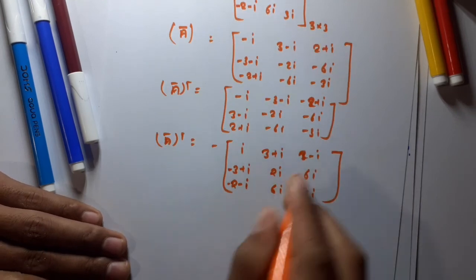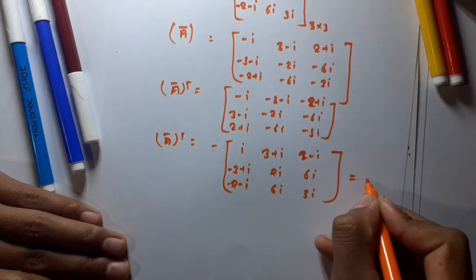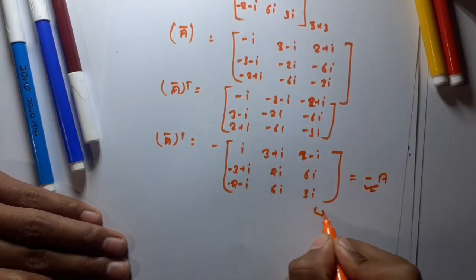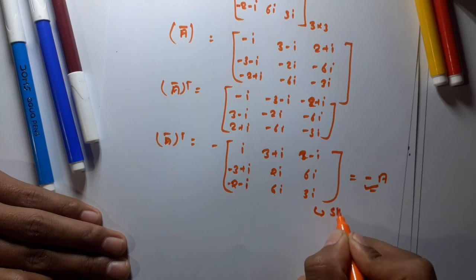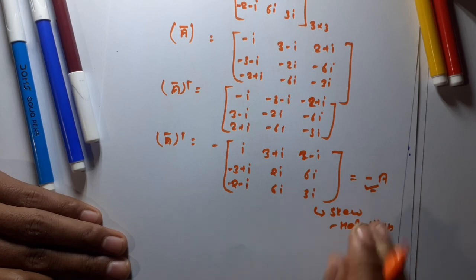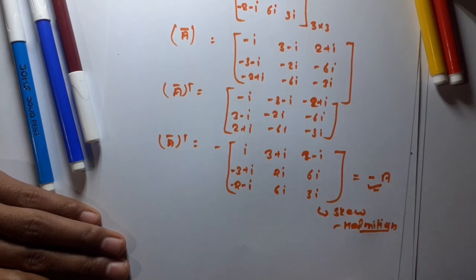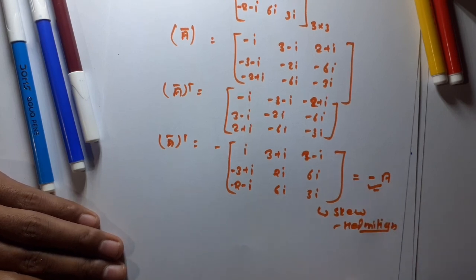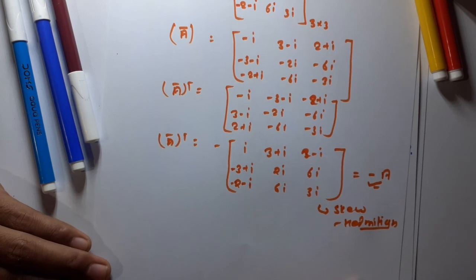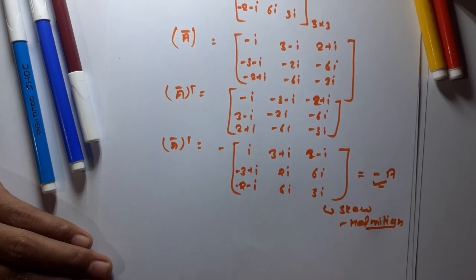Since A-bar transposed equals minus A, this confirms the skew-Hermitian matrix. That is the method to write Hermitian and skew-Hermitian matrices. I hope this video is helpful — please subscribe to the channel and follow.